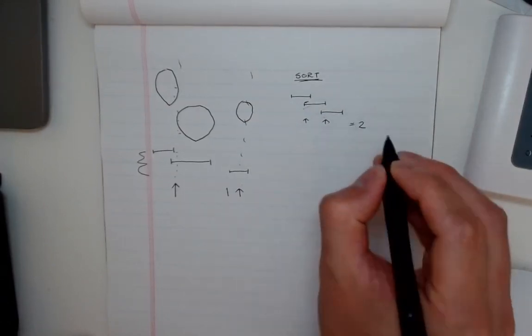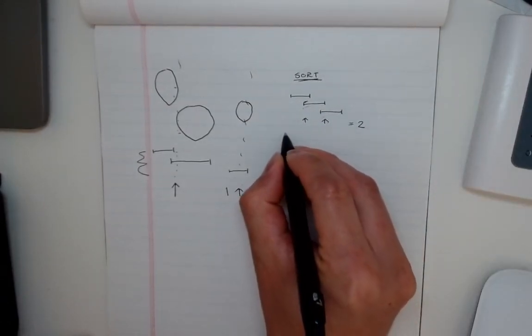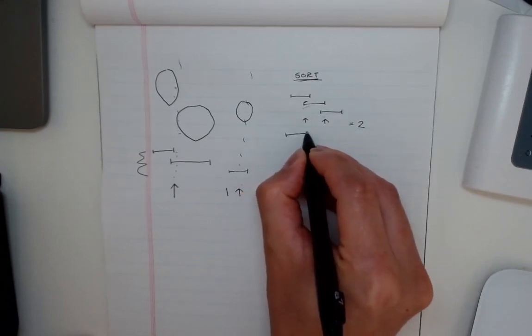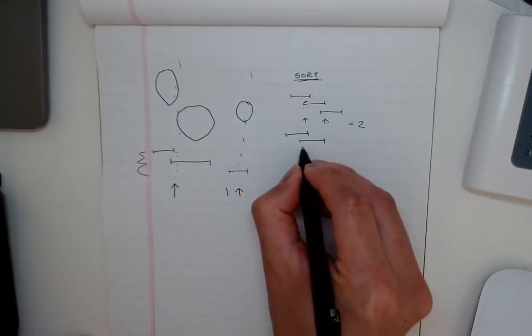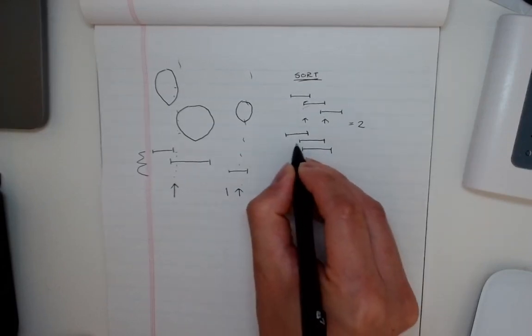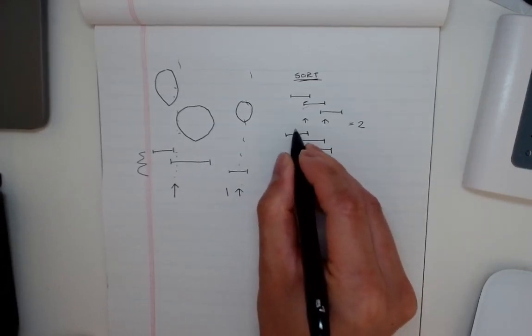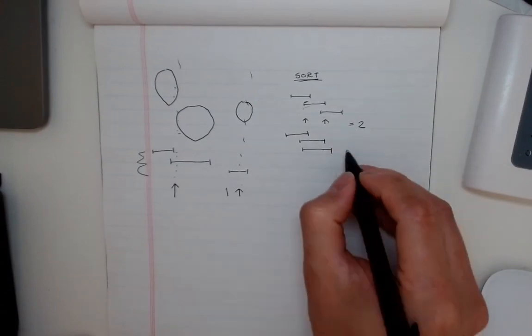In the same way, if they all did overlap, like say it was like this, like all these starts here are below the end of the first balloon, right? So this would just be one.